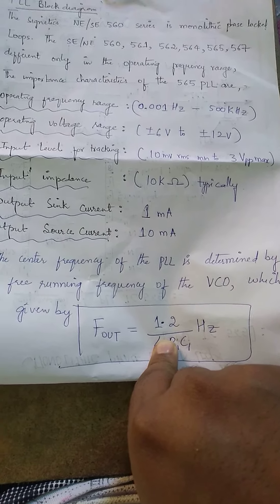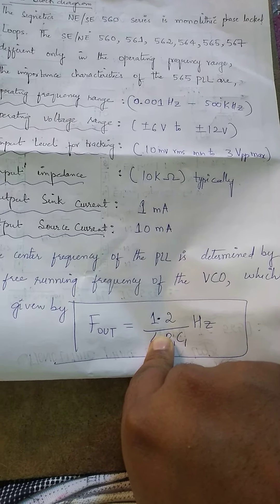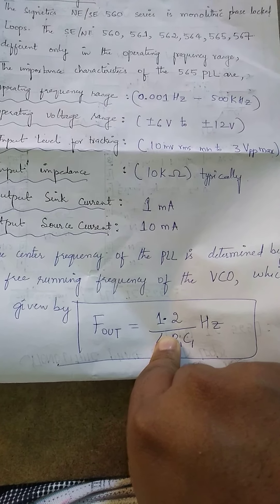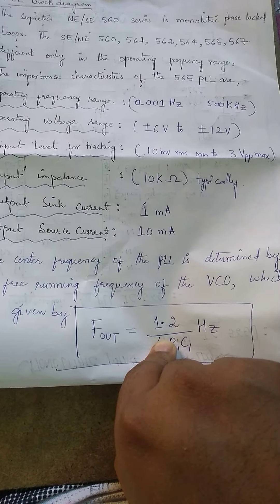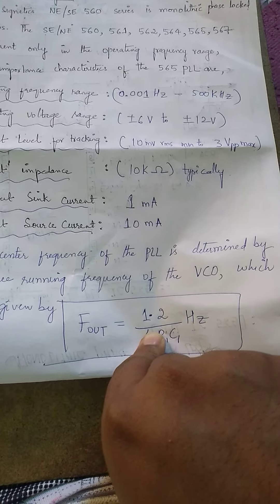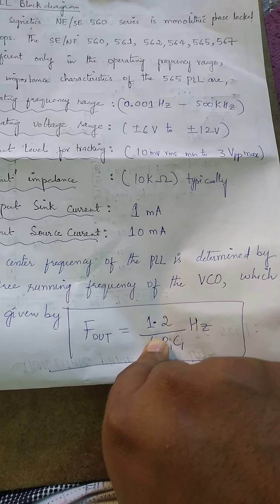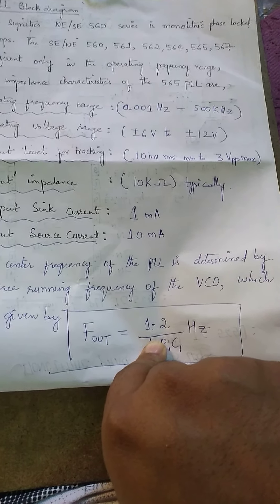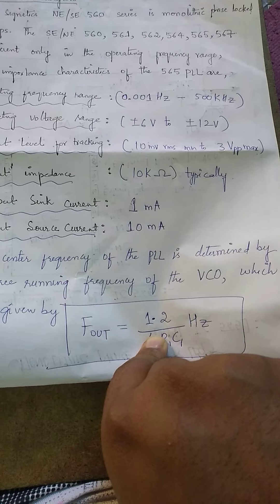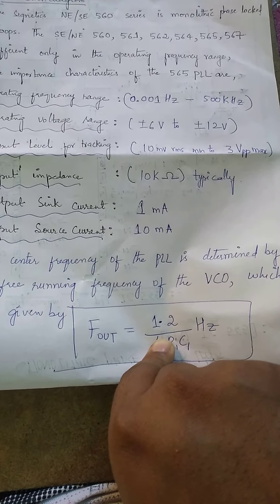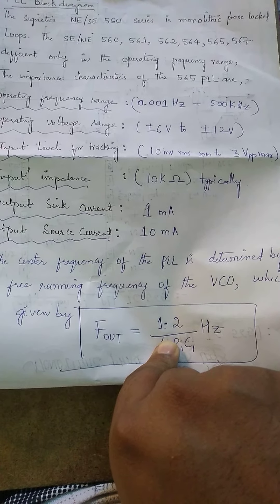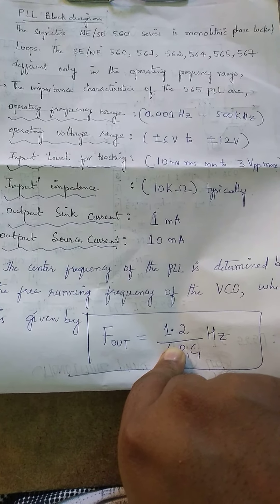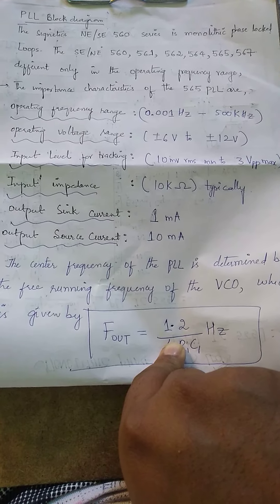Now we will look at the description and different versions of PLL. The Signetics 560 series includes different variants: 560, 561, 562, 564, 565, and so on. The reason for so many series numbers is that each differs in operating frequency, voltage supply, and input/output supply parameters. We mostly use the 565, as discussed here.